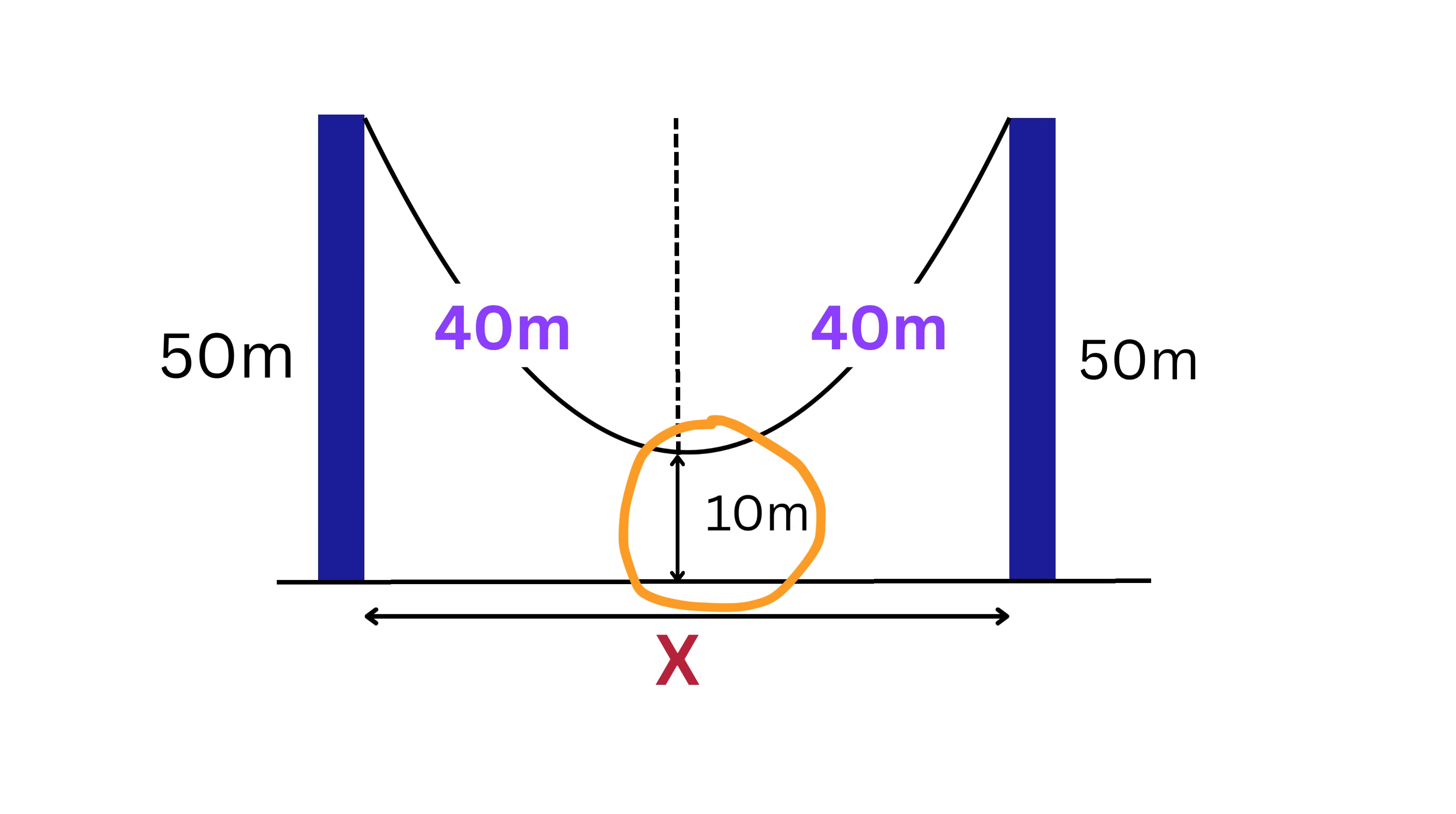But hey, notice we are told that the lowest point of the cable is 10 meters from the ground. That means from the top of the pole, which is 50 meters high, to the lowest point of the cable, this is 40 meters.